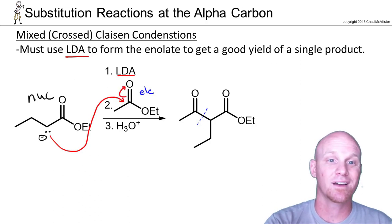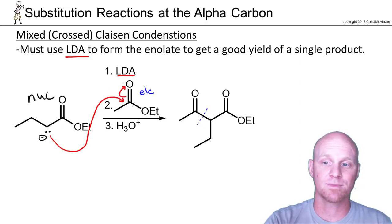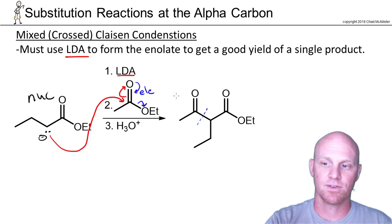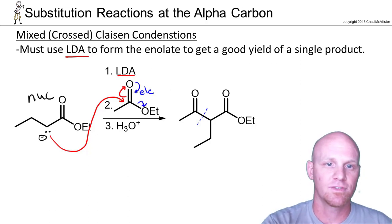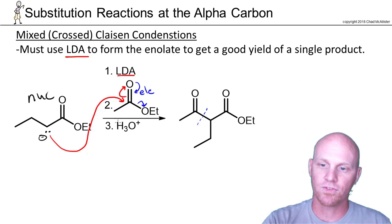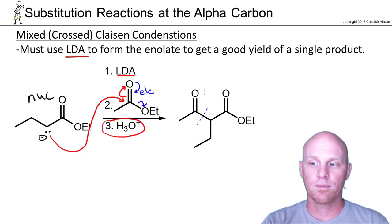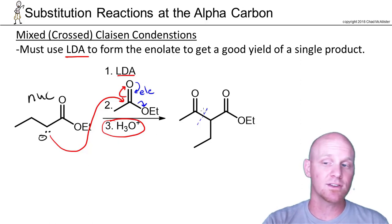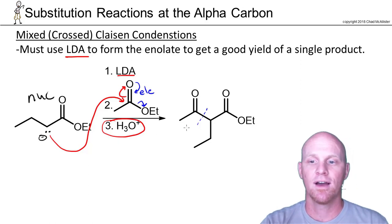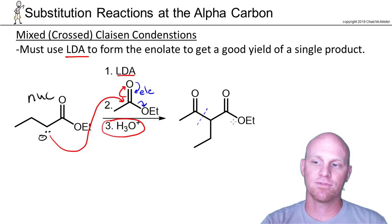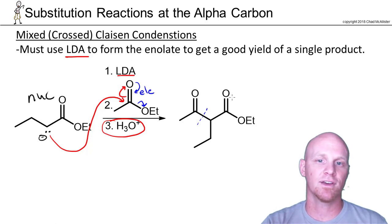The enolate attacks the carbonyl of the second ester, kicking the electrons up, and those electrons come back down and kick off the leaving group. We form the beta-dicarbonyl species, it gets deprotonated at the alpha carbon, and then we add H3O+ to reprotonate it — just like we showed before. That's the idea behind forming a single product with a mixed Claisen condensation: you have to use LDA.